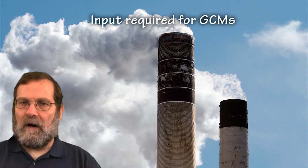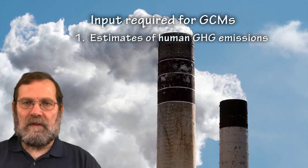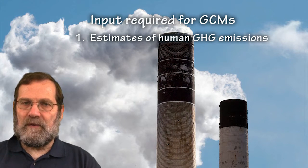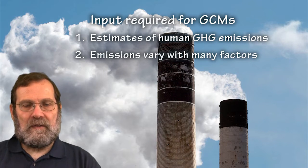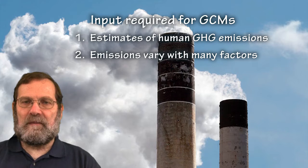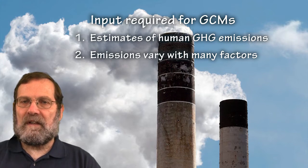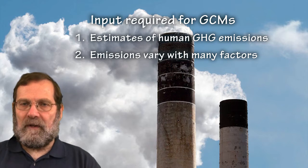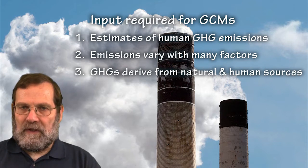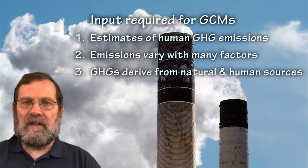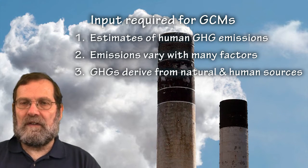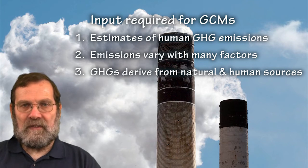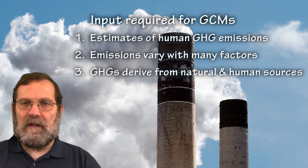The major points of this segment are: 1. Global climate models depend on estimates of future human greenhouse gas emissions. 2. Estimates of human greenhouse gas emissions vary with demographic, social, economic, technological, and environmental factors. 3. The major greenhouse gases — carbon dioxide, methane, nitrous oxide, ozone, and chlorinated fluorohydrocarbons — derive from natural and manmade sources.